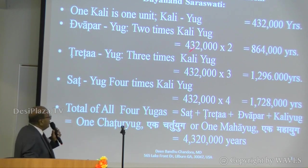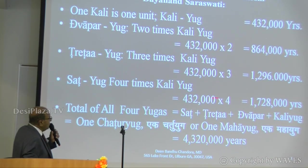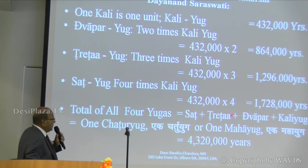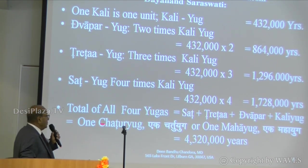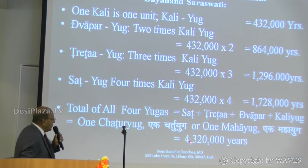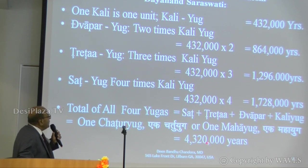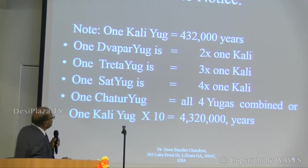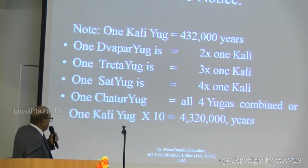So Dwapar Yuga will have times two, Treta times three, Sat Yuga times four. All four Yugas combined — Sat, Treta, Dwapar, and Kali — make one Chatur Yuga. One Chatur Yuga equals these figures, which are actually ten times the Kali. The total figure is ten times the Kali Yuga.